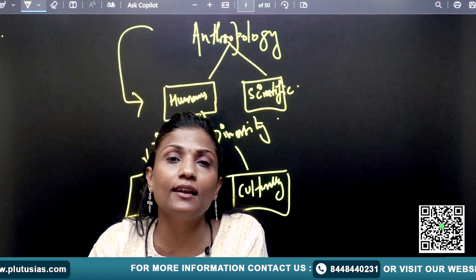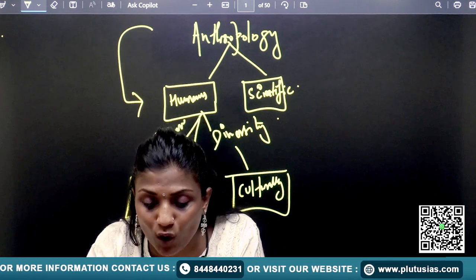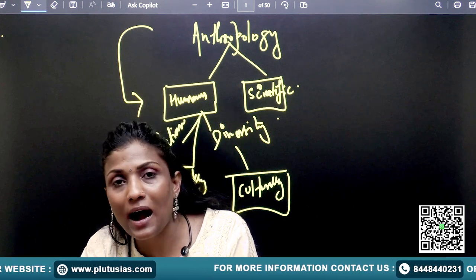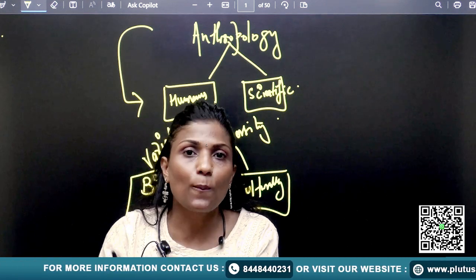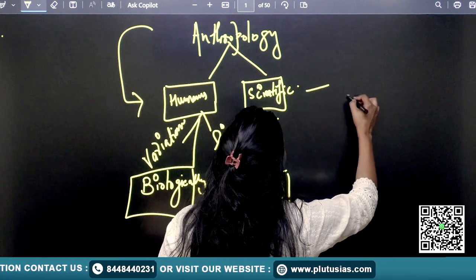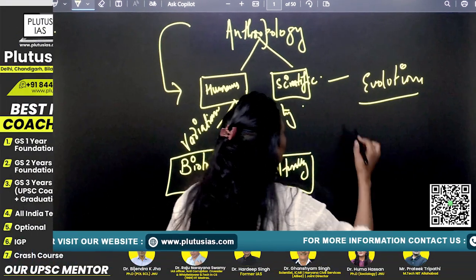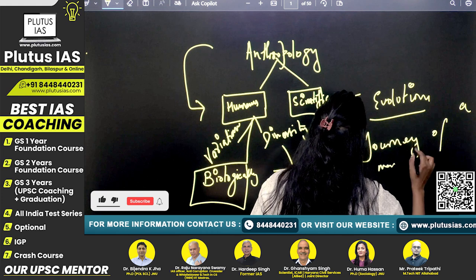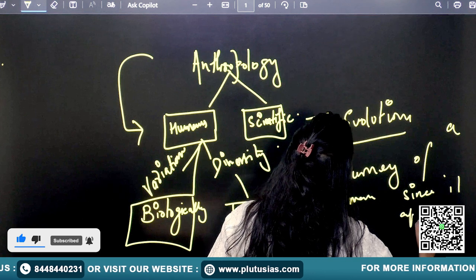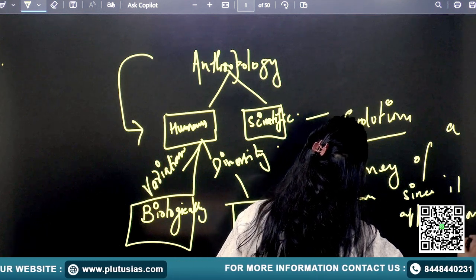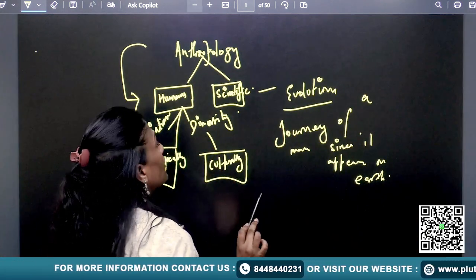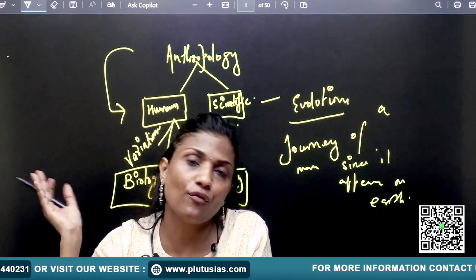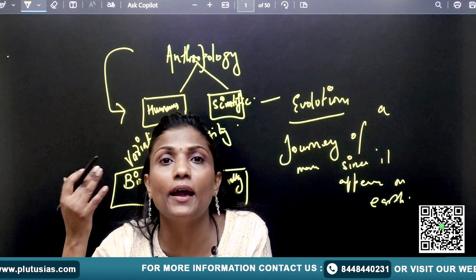We are studying in anthropology about man's evolution in time and space. We are trying to understand man's journey — how he became homo sapiens sapiens — and what is humans' role in contemporary society. So from past to present, we are reading everything about humans. Anthropology is definitely focusing on the evolution of men. It's a journey of mankind since it first appeared on earth.